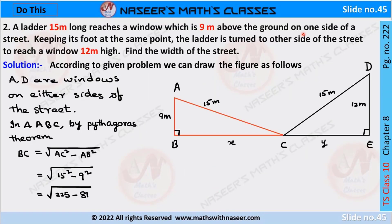Now we solve page number 222, second problem: a ladder 15 meters long reaches a window which is 9 meters above the ground on one side of the street. Keeping its foot at the same point, the ladder is turned to the other side of the street to reach a window which is 12 meters high. Find the width of the street. According to this problem we can draw two triangles, where A is the window on one side and D is the window on the other side of the street.